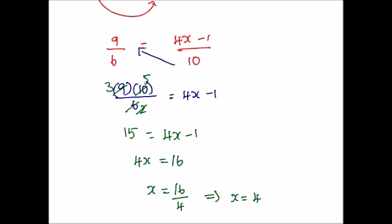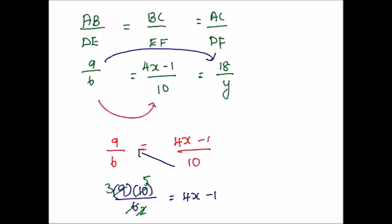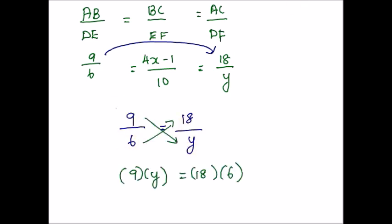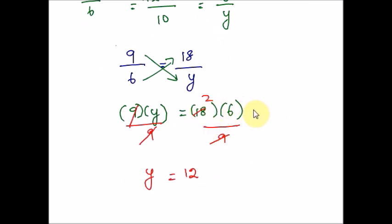We can use the same proportion set to solve for Y. This time we equate the first and third ratios: 9 over 6 equals 18 over Y. Cross multiply. Since Y is in the denominator, bring it to the numerator by cross multiplying. Divide both sides by 9. The leftovers in the top give 2 times 6, which is 12. So Y equals 12.